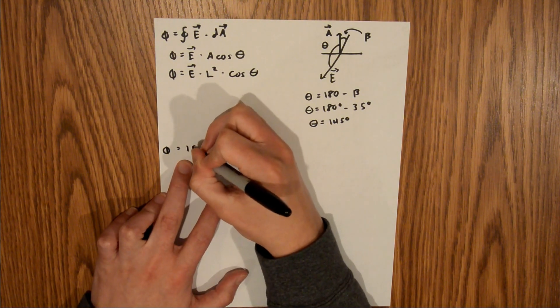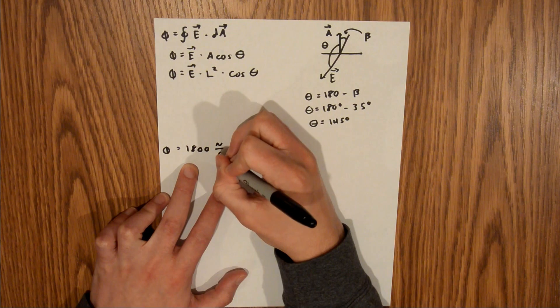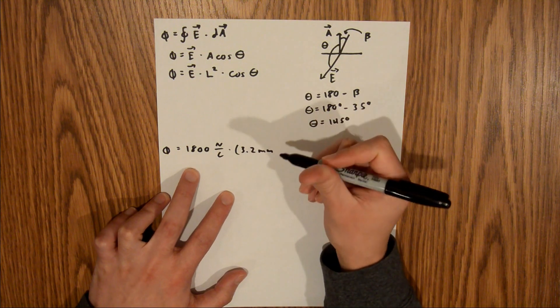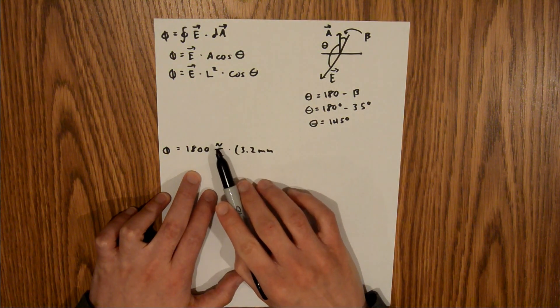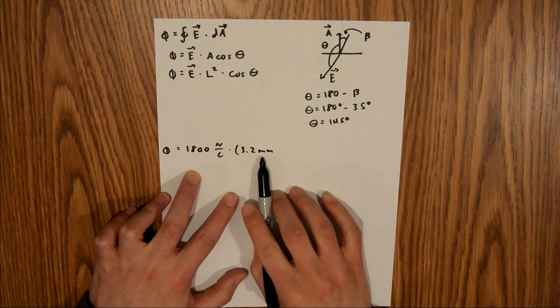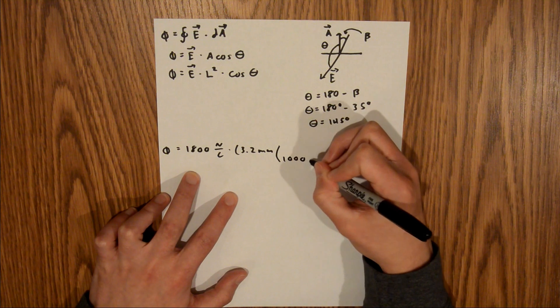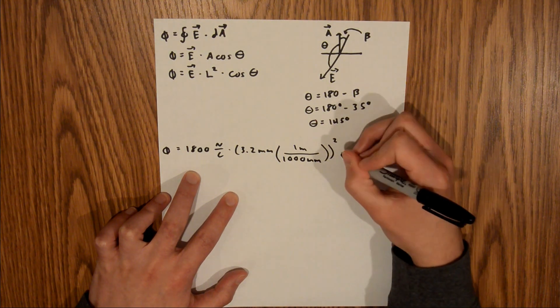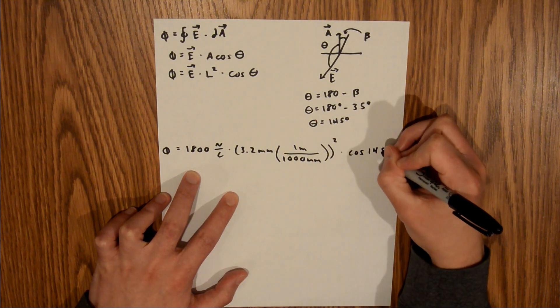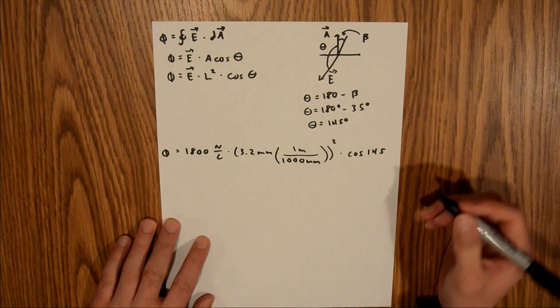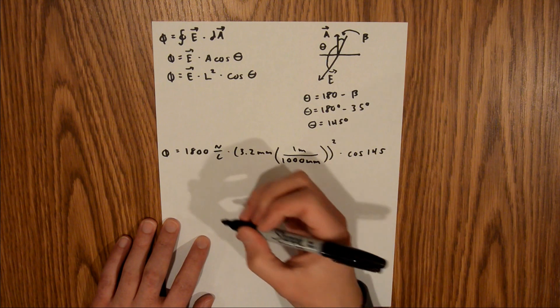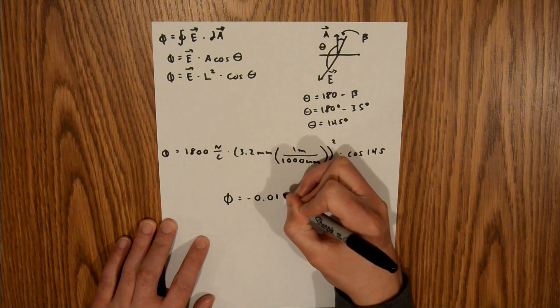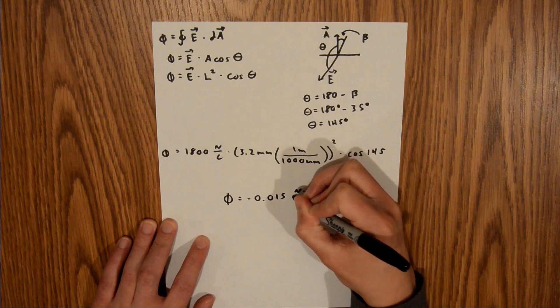Flux equals 1800 newtons per coulomb times 3.2 millimeters. That is the length we are given. The issue is this newton contains meters, and here we have millimeters, so we need to convert millimeters to meters. The way we do that is 1000 millimeters in one meter. Now we square that term, and that's times the cosine of 145. When you plug all of that into your calculator, ensure your calculator is in degree mode and not radian mode. If you do that, your flux should equal negative 0.015 newton times meters squared per coulomb.